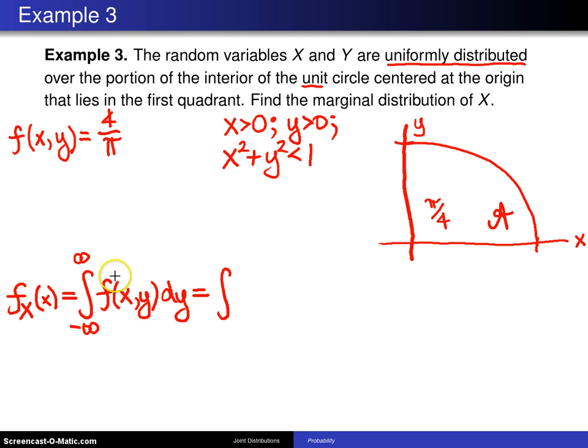So this will be the integral of the joint density, which is 4 over π, dy. And now we want to figure out the limits because we're integrating with respect to y. You will have an upper and a lower limit that looks like this. We'll start with the easy one.